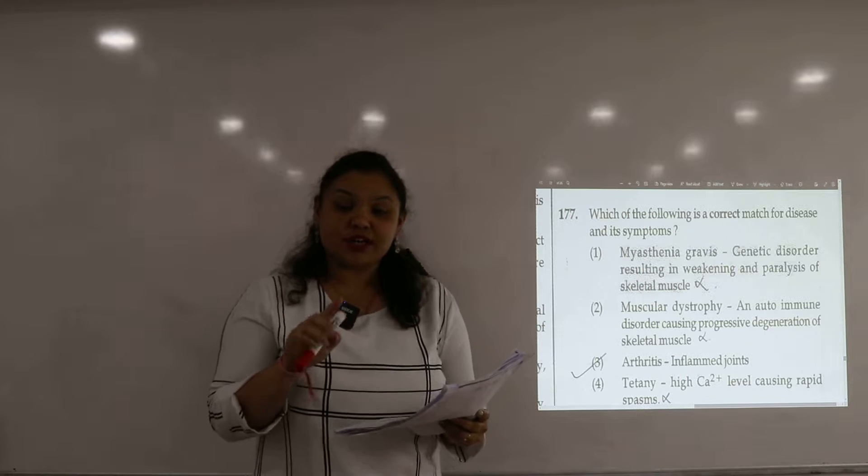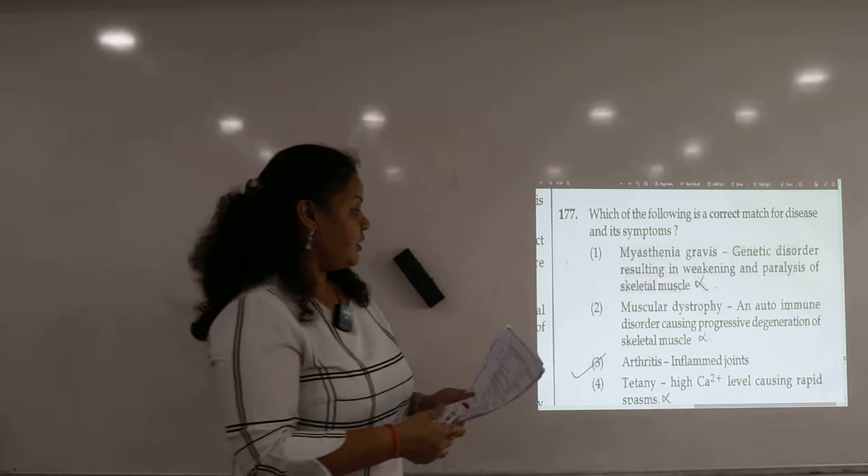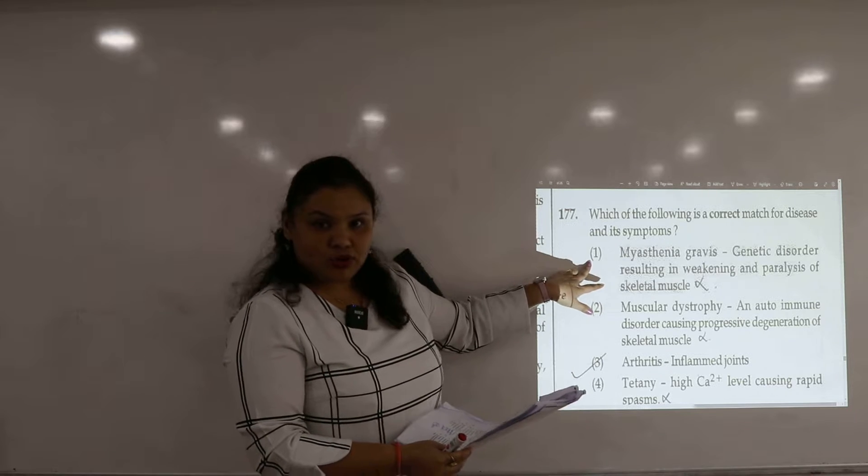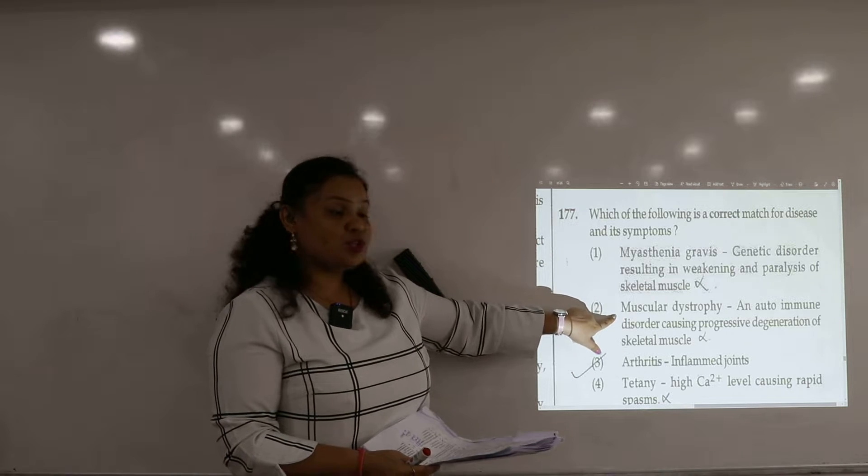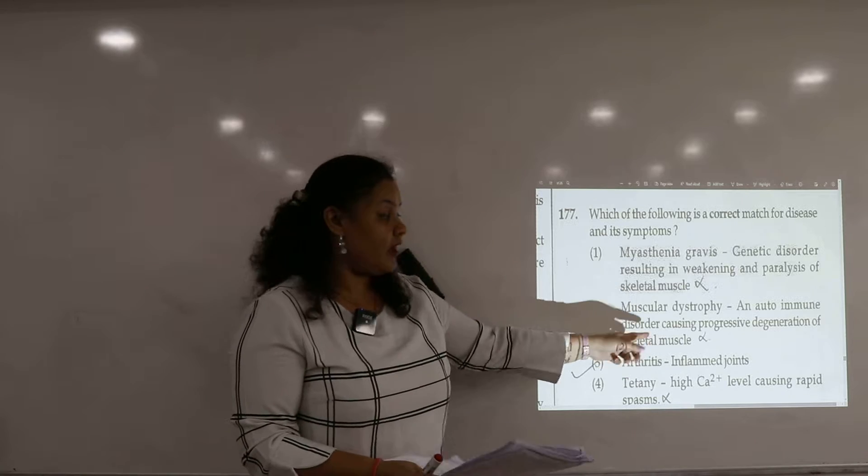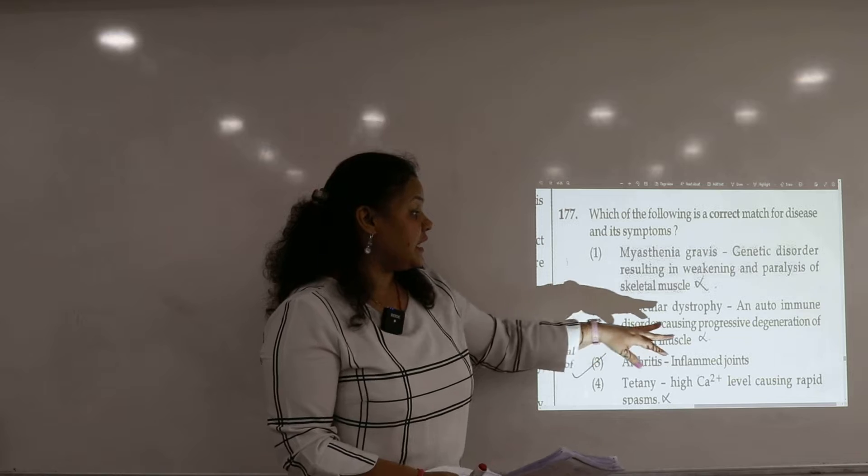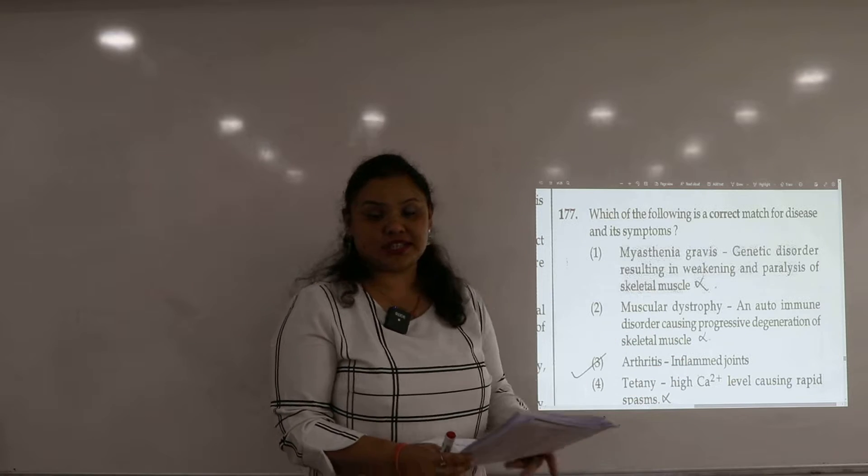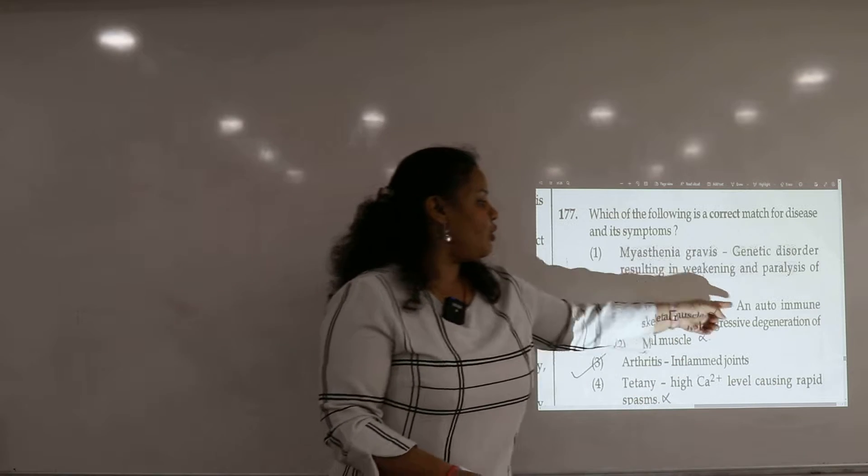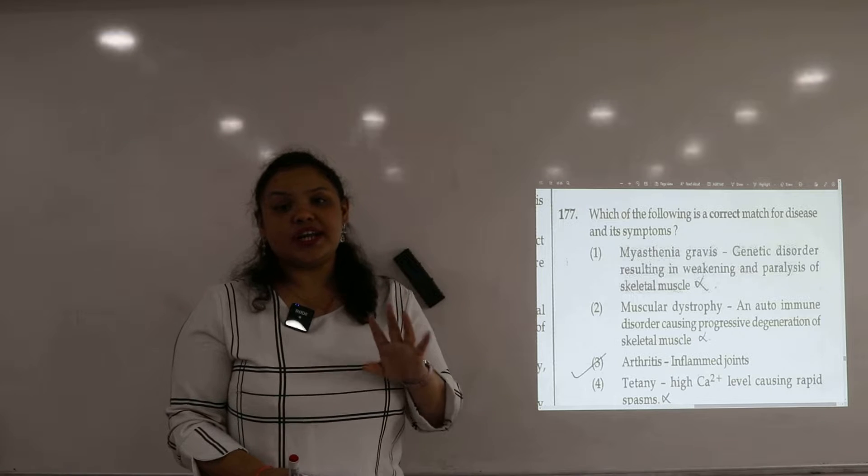genetic disorder resulting in weakening and paralysis of skeletal muscle. So myasthenia gravis is an autoimmune disorder. Next option, this is wrong. Next is muscular dystrophy. This is written as an autoimmune disorder causing progressive degeneration of skeletal muscle. So this is not an autoimmune disorder.